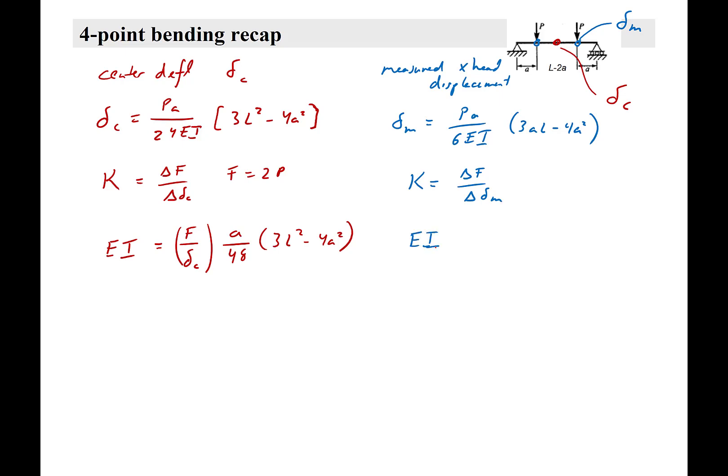When we substitute in del M, we get an effective EI. Again, it's dependent on how we set up the test. So those are similar equations but somewhat different. Now again, we are using this ASTM bending standard. I want you to note here that different variable names.